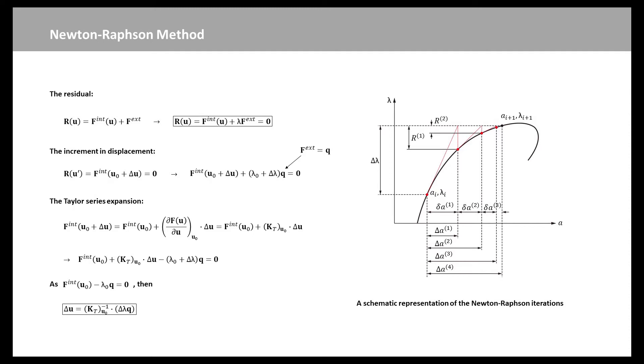Thus, by increasing or decreasing lambda, we can control our load incrementation. We introduce the term R(u) because we are interested in the general case where the system of equations is not in equilibrium.